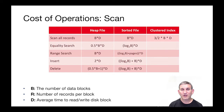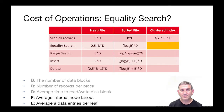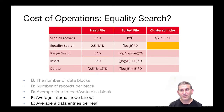Now let's turn our attention to equality search, where hopefully we can do much better. To analyze equality search, we introduce two new variables: F, the average internal node fanout, and E, the average number of data entries per leaf — the leaf node fanout.